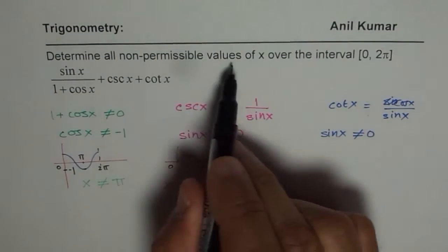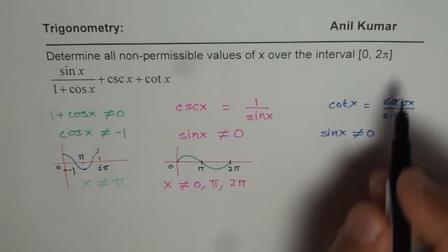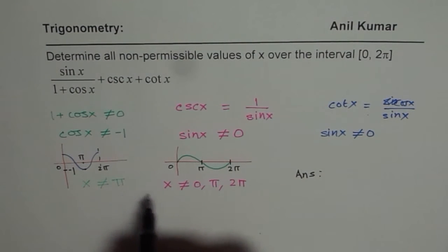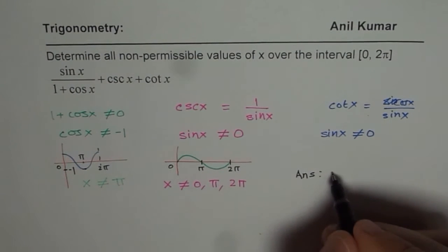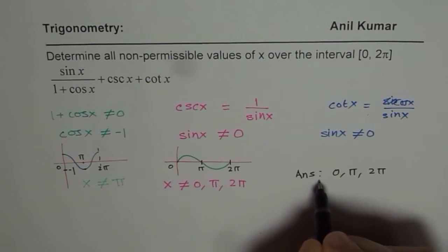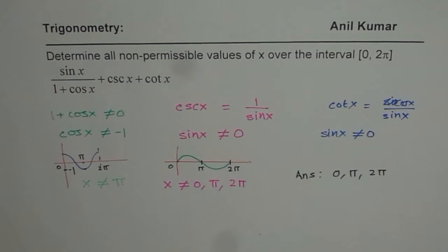0 π and 2π. Now we can write down our answer by combining all the restrictions. So we can say non-permissible values. So we say non-permissible values of x over this interval are, so the answer is 0, π and 2π. You get the idea. So all these three values are non-permissible in our particular case.